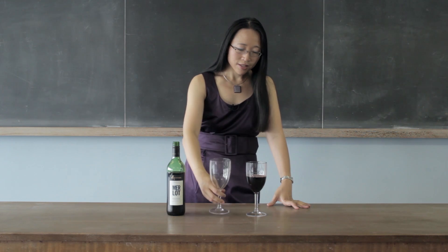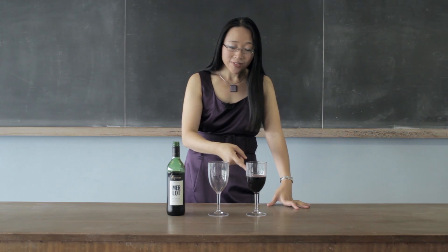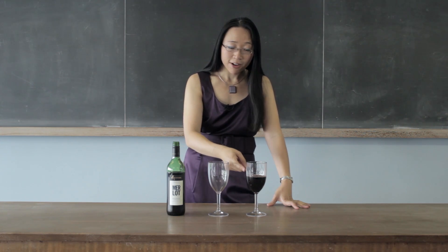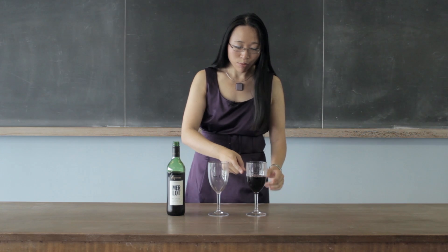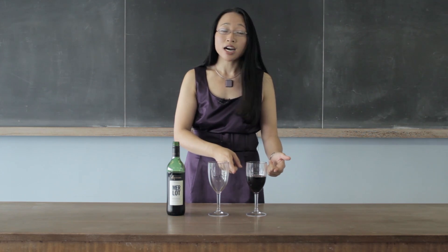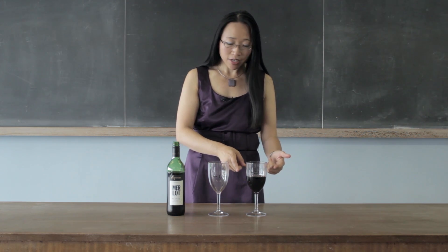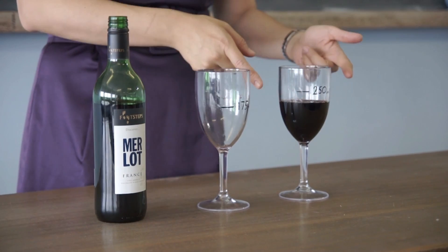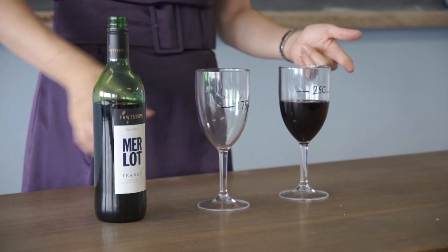nicely aerating the wine in the process — how much of a gap is there now at the top of that glass of wine? Well, it's 250 minus 175. So there's a 75 milliliter gap at the top.